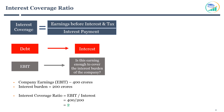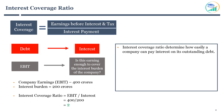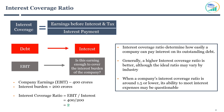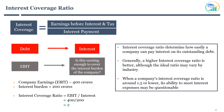Let's summarize a few important details on interest coverage ratio. The interest coverage ratio determines how easily a company can pay interest on its outstanding debt. Generally, a higher interest coverage ratio is preferred, although the ideal ratio may vary by industry. When a company's interest coverage ratio is around 1.5 or lower, its ability to meet interest expenses in the future may be questionable. I generally prefer companies with an interest coverage ratio of more than 2 before considering investing.